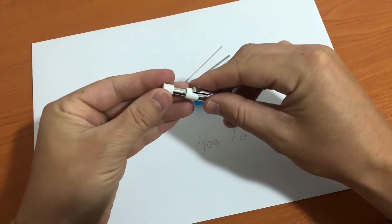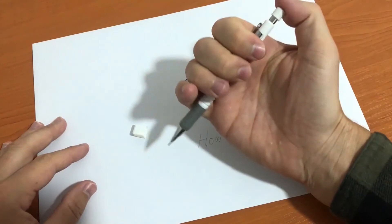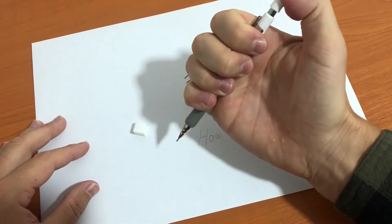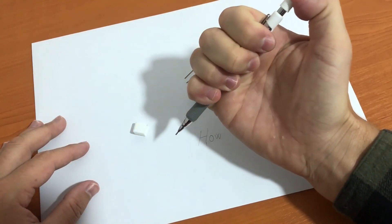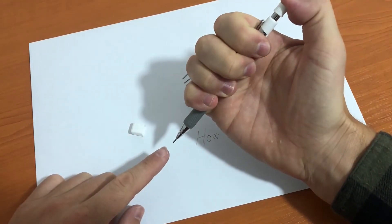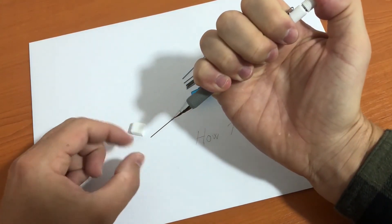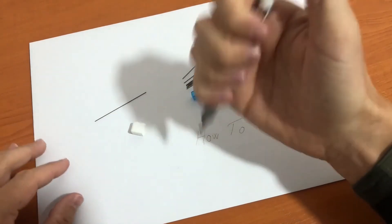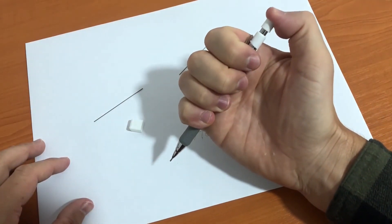And let's now try the mechanical pencil again. Press it a couple times and you can see the first lead is coming out. Take it out. Press it again a couple of times, the second lead is coming out also. Take it out.